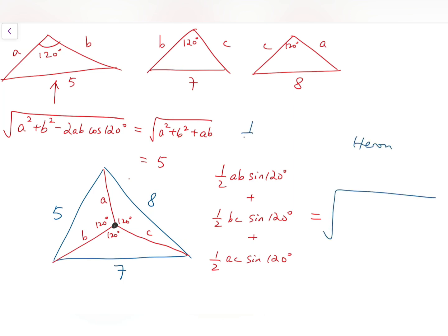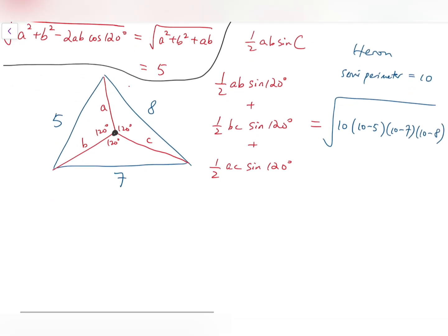So, the semi-perimeter of this triangle is 10. So, 10 times 10 minus 5, 10 minus 7, 10 minus 8. And simplifying, we have the right-hand side to be 10 times 5 times 3 times 2, which is 300 square root. So, 10 root 3 on the right side, while on the left, we have terms involving half of sin 120 degrees, which is actually root 3 over 4.